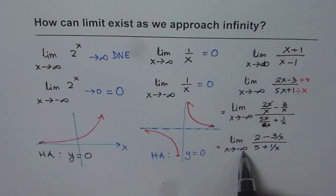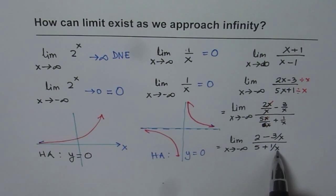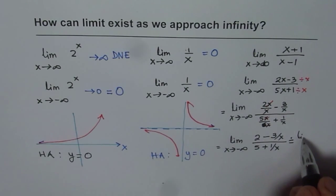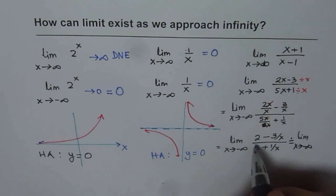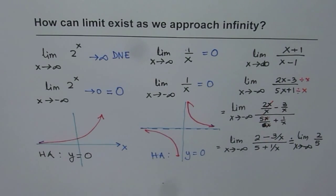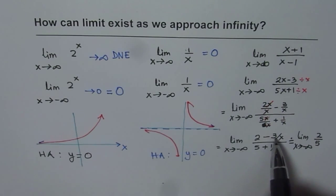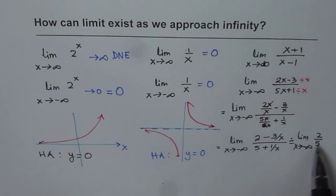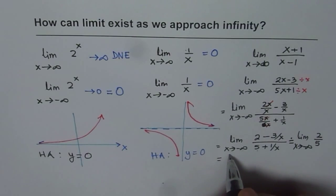Now, if x is a very large number — let's say minus 1000 — then 1 divided by minus 1000 is negligible, almost 0. So I can approximately write this as the limit as x approaches minus infinity of 2 over 5, since 3 over x and 1 over x will both approach 0 when x is approaching a very large number. The limit of a constant is a constant, so we get our answer: the limit of this function is 2 over 5.